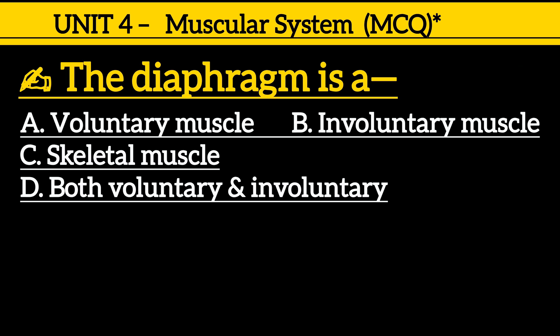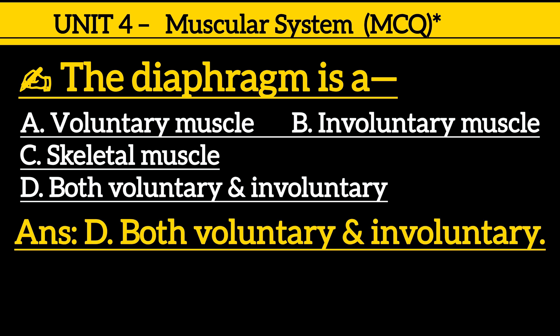Next one is: the diaphragm is a — option A: voluntary muscle, option B: involuntary muscle, option C: skeletal muscle, option D: both voluntary and involuntary muscle. Correct answer is option D, both voluntary and involuntary muscle.